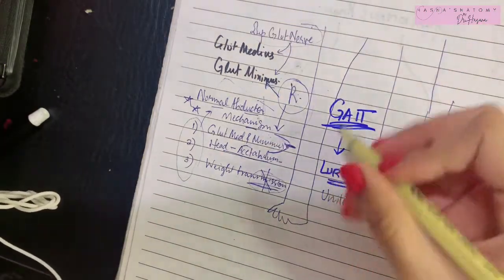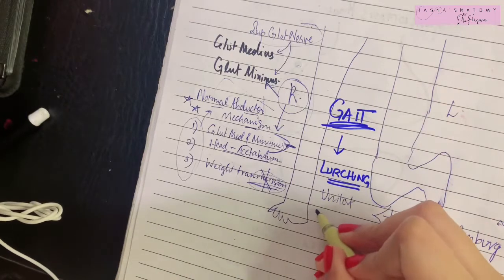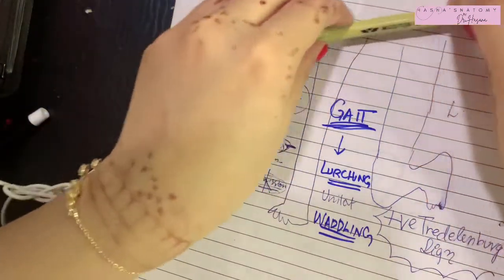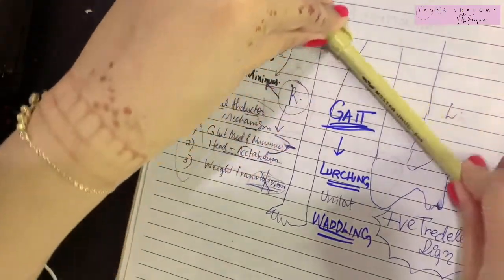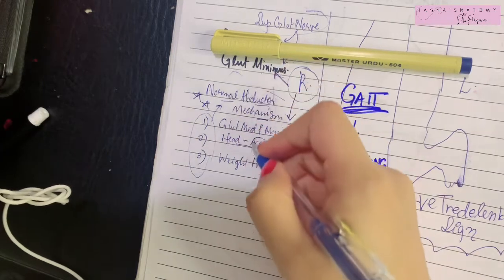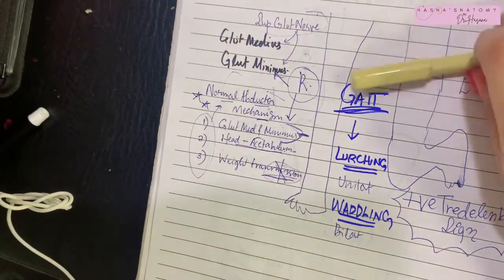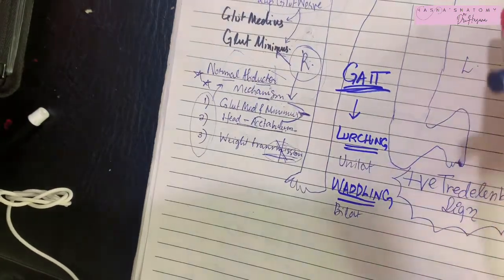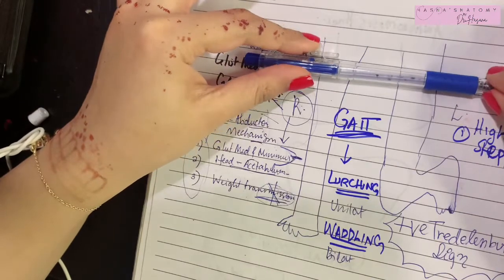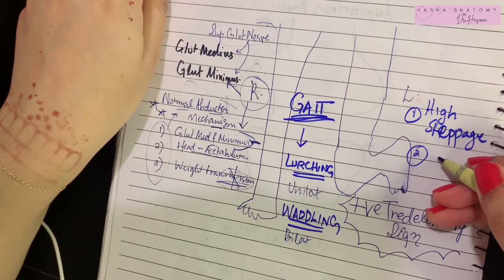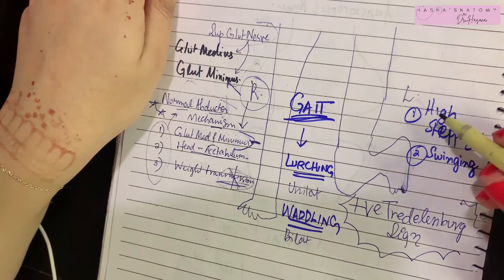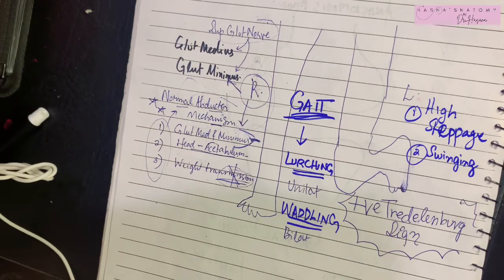If there is bilateral paralysis — both sides' abductor mechanisms are deranged — it results in the waddling gait. In the waddling gait, the patient walks by bending to one side, then the other, alternating with each step. Apart from this, there are other compensatory gaits a person may adopt to lift the pelvis so it does not drop. These include the high-stepping gait, where the person takes very high steps, and the swinging gait, where the person swings the foot off the ground while walking.